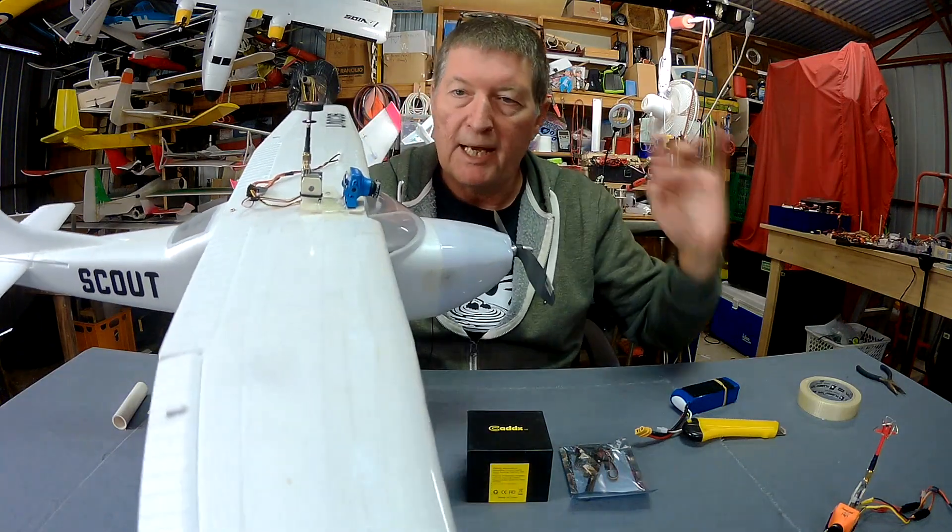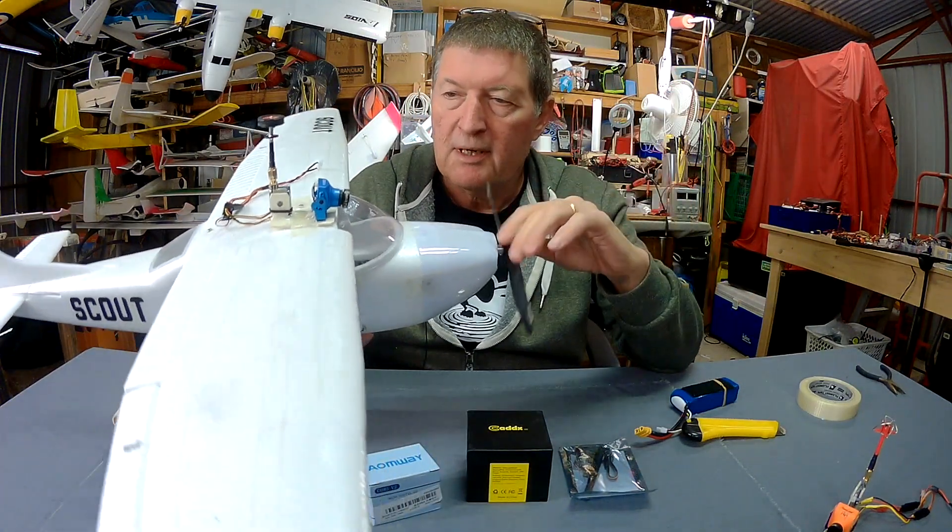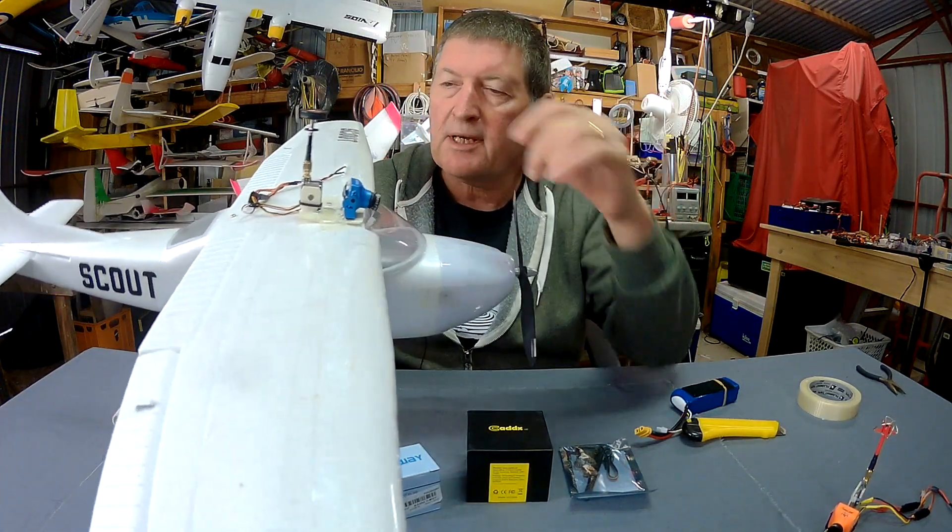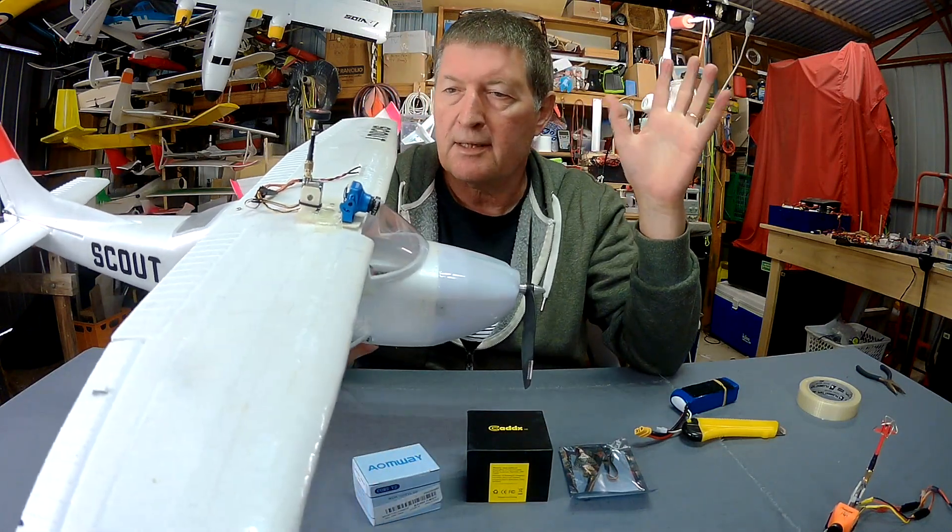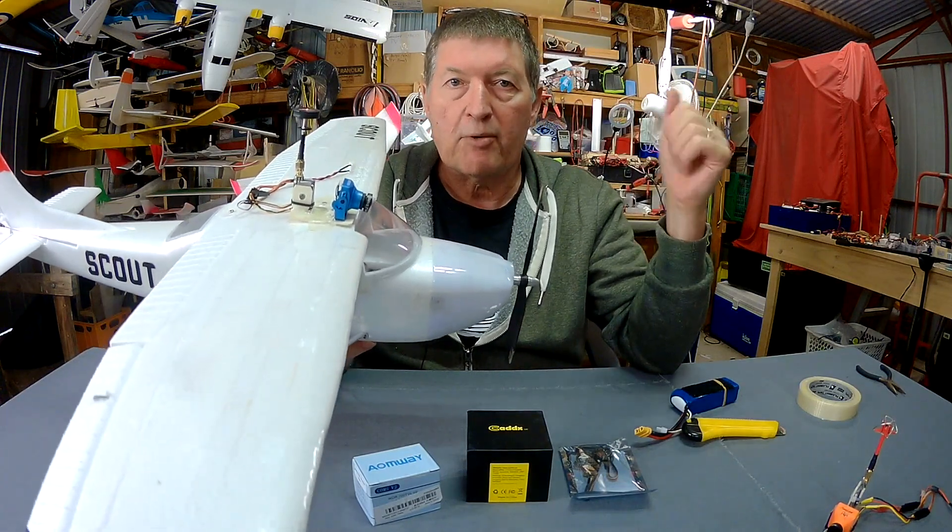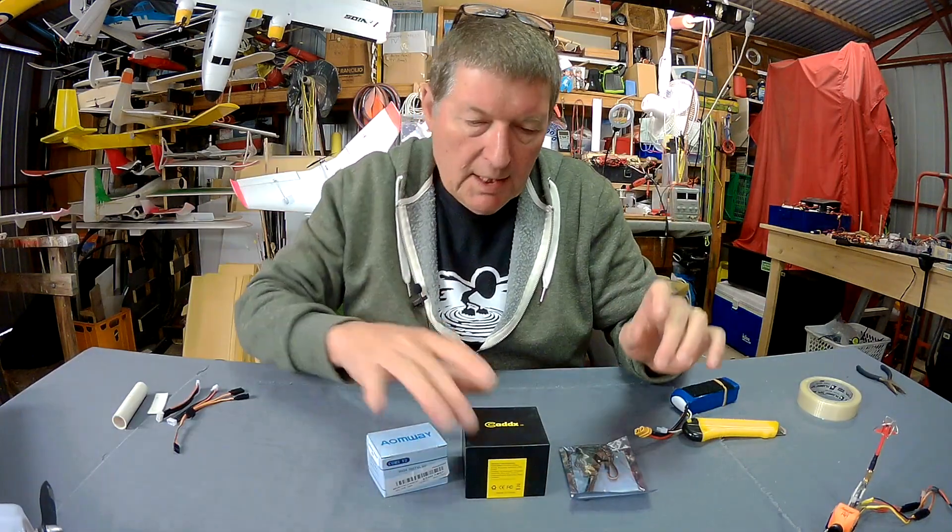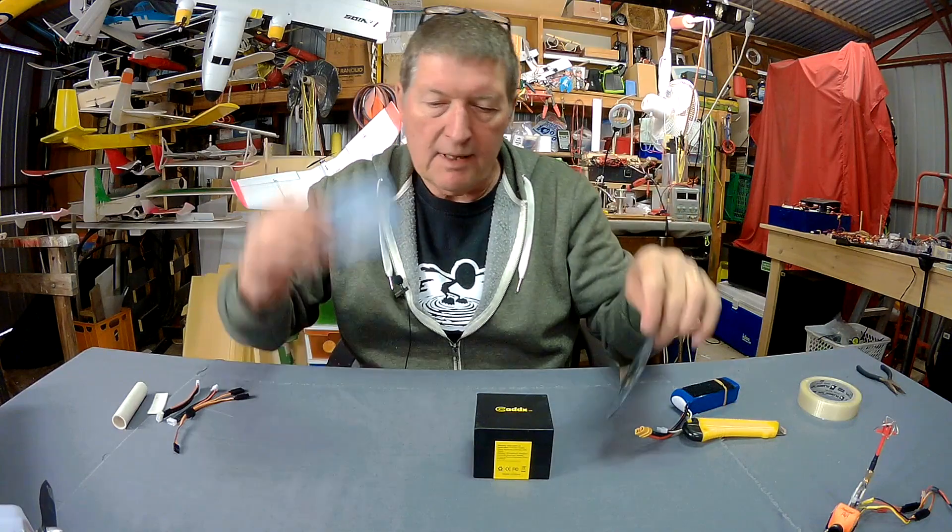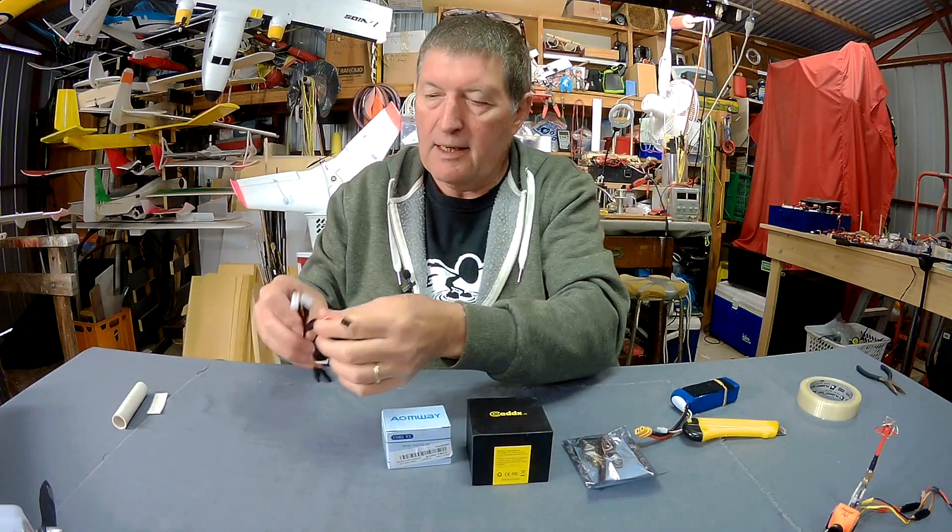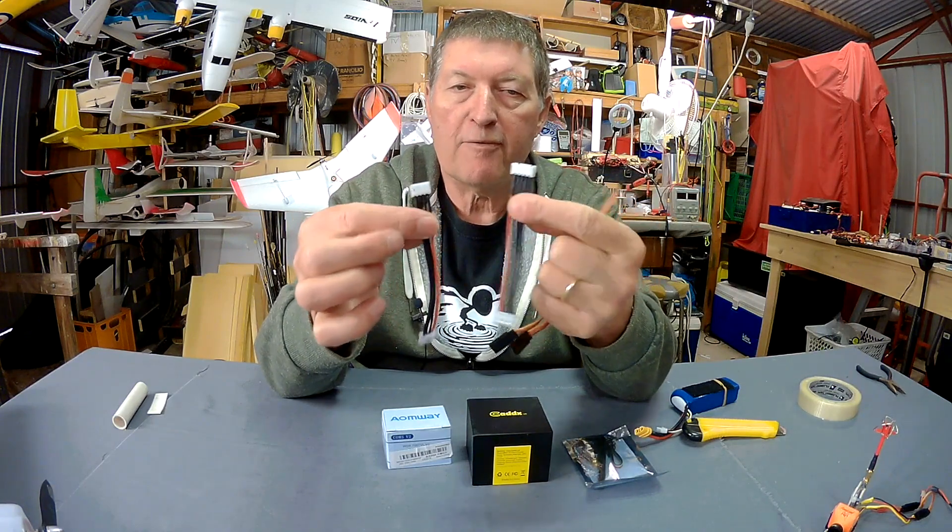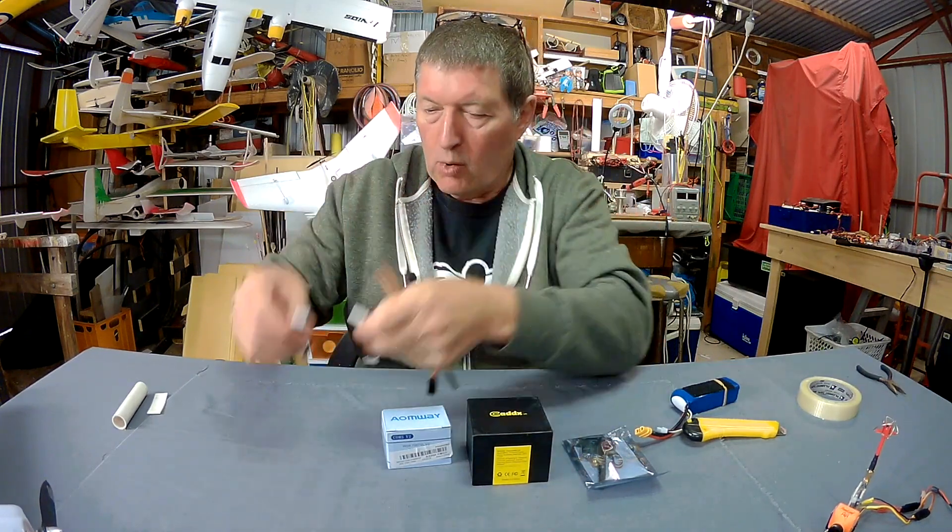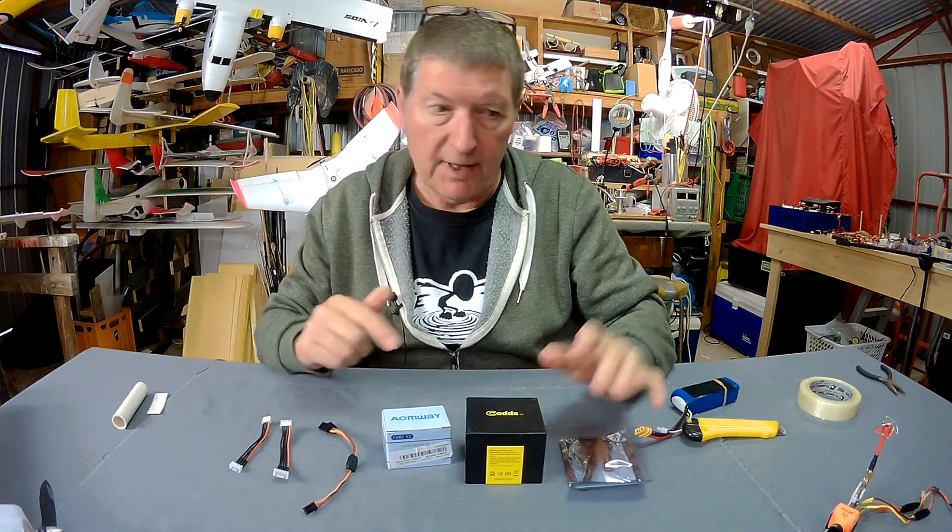I like to swap my cameras around from plane to plane because I have a lot of planes of course. And I test a lot of different cameras so I've made it so that I can swap cameras and transmitters to different planes very quick and easy. So what you're going to need is a camera, a video transmitter, some antennas and a little wire lead and a 3S or 4S balance lead extension. All of these are available at Banggood and I'll pop links in the video description.